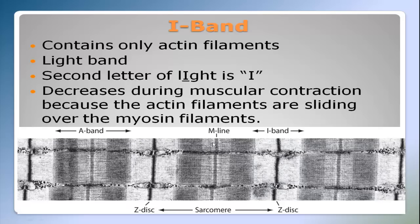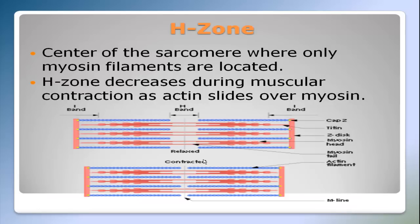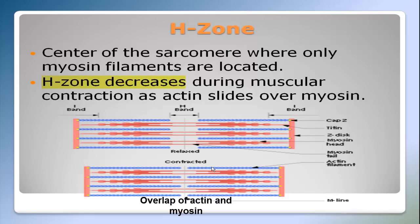At the middle of the sarcomere — remember, from Z line to Z line is a sarcomere — at the middle of the sarcomere, that's called the H zone, and that's where only myosin filaments are located. The H zone decreases during muscular contraction as actin slides over myosin. In a relaxed muscle, only myosin filaments are located in the center. The actin molecule slides inward over the myosin molecule, and the H zone decreases because there's an overlap between actin filaments and myosin filaments.